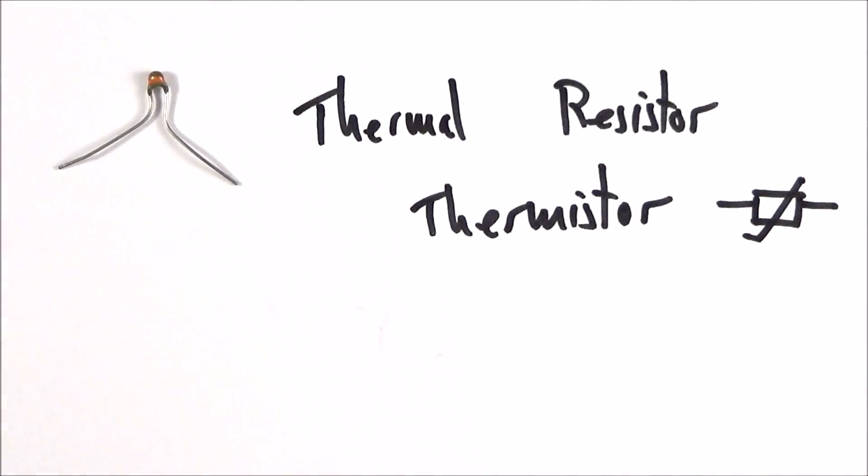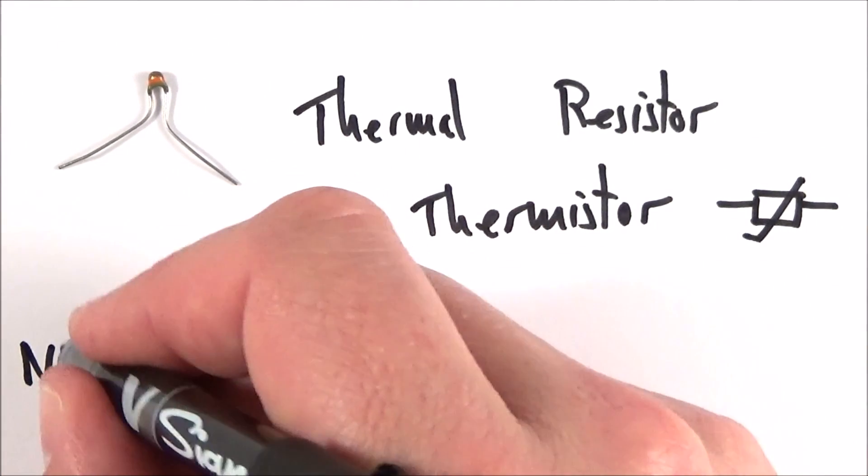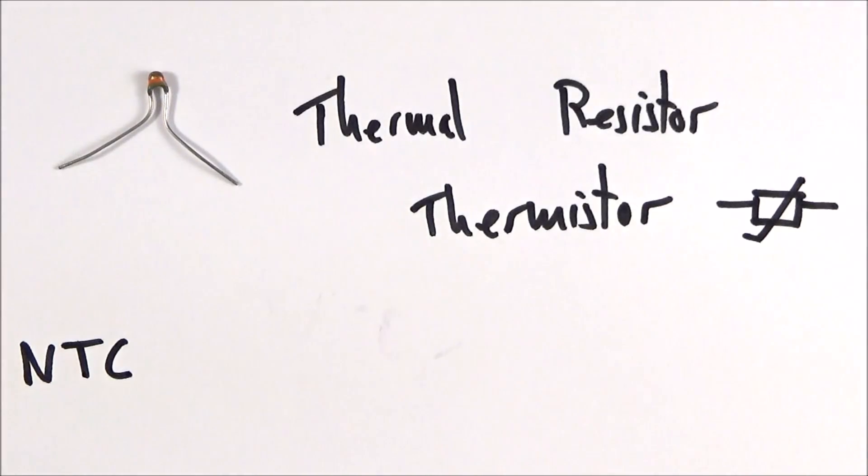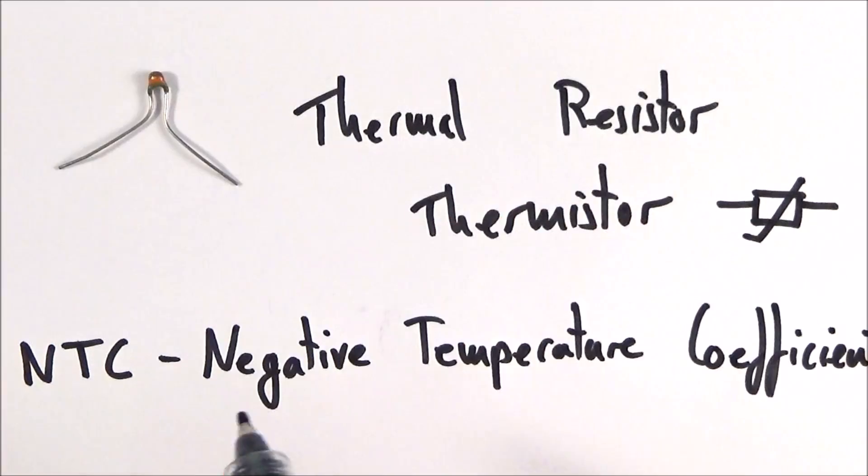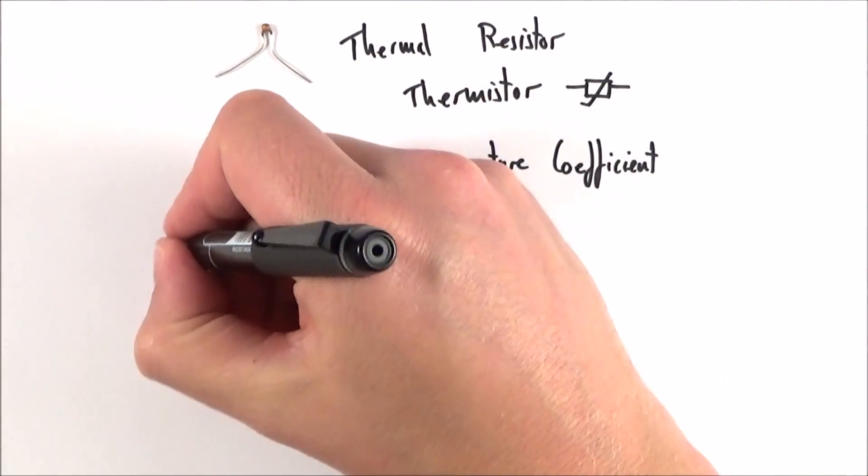The ones that we're particularly interested in are called NTCs, which stands for Negative Temperature Coefficient. What does that mean? Well, if we think about this graphically, we can look at a graph of the resistance in ohms versus the temperature in degrees Celsius.